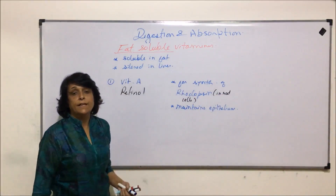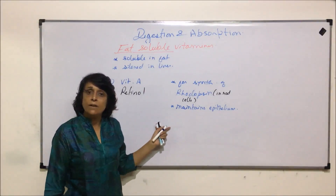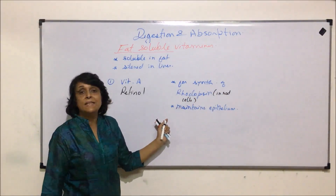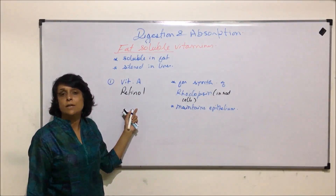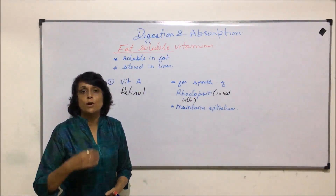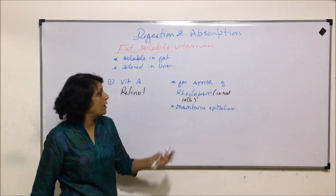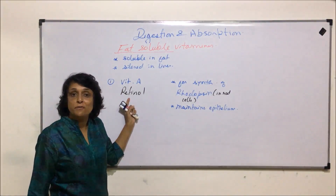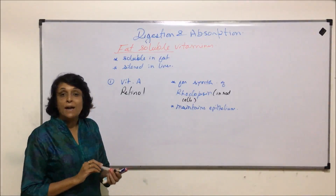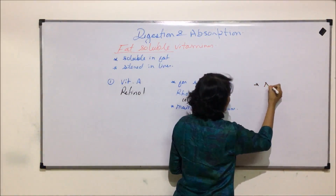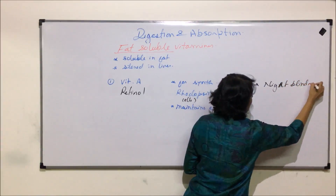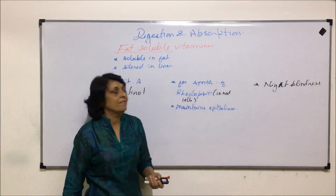If we understand the functions, it is very easy to conclude what kind of deficiency would be seen if these things are not happening. Since rhodopsin and rod cells are responsible for day-night or black-and-white vision, in the absence or deficiency of vitamin A, rhodopsin synthesis would get affected and that vision part would also get affected. That deficiency is known as night blindness. The word is slightly misleading when we talk of night blindness.